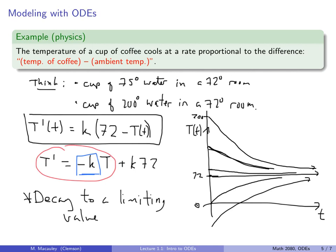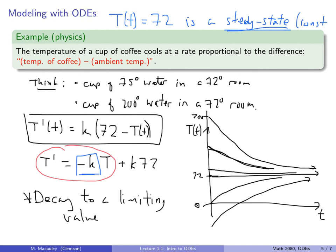Let me finish this slide by noting that this function T of t equals 72 is a steady state — that's a keyword. All it means is a constant solution. We know that we have an equation that looks like this. We don't know how to solve it, but we know what the solutions look like. We know one solution explicitly: big T of little t equals 72 is a solution and we call it a steady state solution because it is constant. Whenever you see the word steady state, think constant.